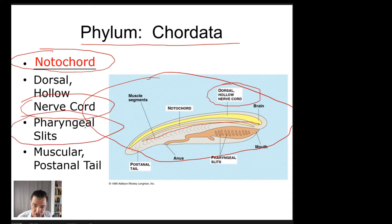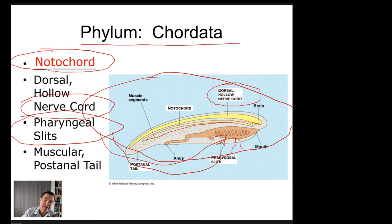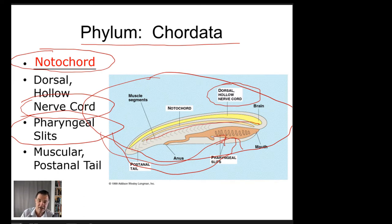All chordates also have pharyngeal gill slits used for respiration — slits along the side of the animal that allow oxygenated water to move through, capturing oxygen and releasing CO2. All chordates have these, even humans early in development. By early I don't mean one or two years old — I mean way before you're born, perhaps when mom is two months pregnant.